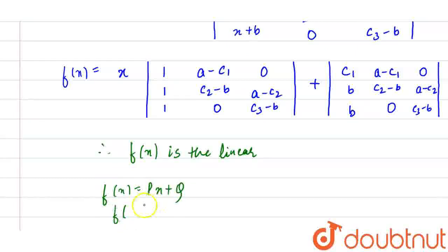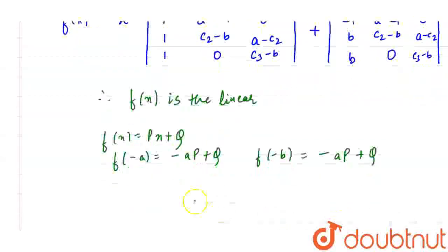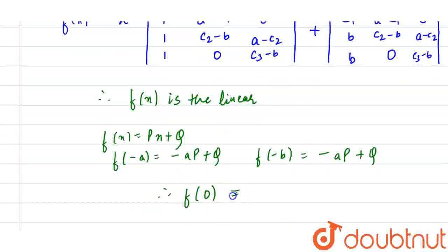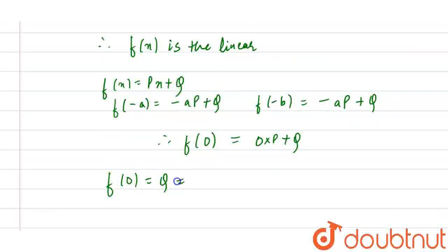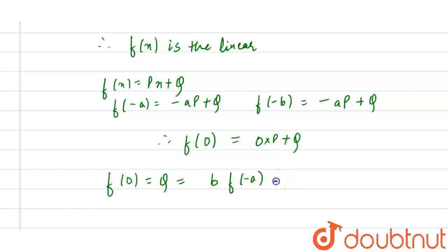Similarly we calculate f(−a) = −ap + q and f(−b) = −bp + q. If we calculate f(0), we get f(0) = 0·p + q = q. So the value of q equals f(0), which can be expressed as: q = [b·f(−a) − a·f(−b)] / (b − a).